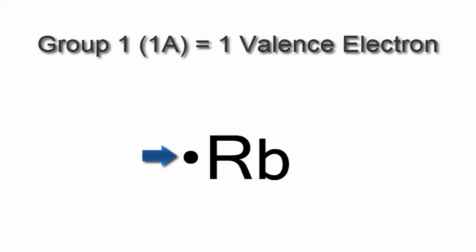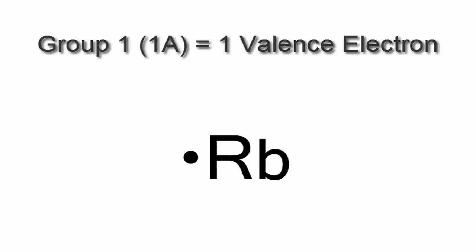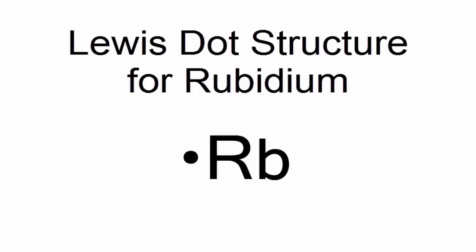And that's all there is to it. So that's the Lewis dot structure for rubidium. This is Dr. B, and thanks for watchin'.